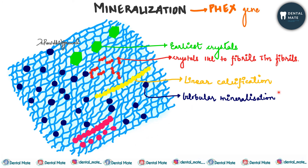In summary: linear calcification with an uninterrupted front is found in mantle dentine; globular mineralization is found just below the mantle dentine in circumpulpal dentine; and a combination pattern — where the globular phase alternates with the linear phase — is seen in the remaining circumpulpal dentine.